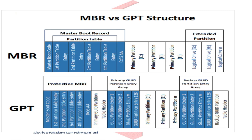GPT — the GUID Partition Table — uses a Globally Unique Identifier for every partition, so each partition has a unique ID that is the same worldwide. GPT contains a protective MBR for backward compatibility, followed by the primary GPT partition entries and a backup GPT partition at the end of the disk. The primary GPT partition entry is similar to the partition entry in MBR but with significant advantages.